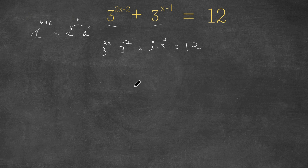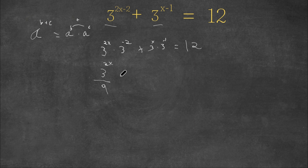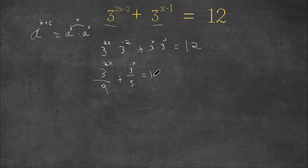Now we simplify. 3 to the power of negative 2 is 1/9, so the first term becomes 3 to the power of 2x over 9. And 3 to the power of negative 1 is 1/3, so the second term becomes 3 to the power of x over 3. All of this still equals 12.